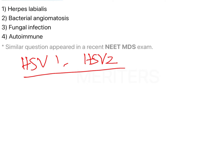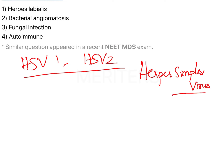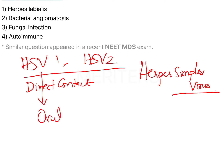HSV-1 and HSV-2 are majorly caused by herpes simplex virus. The transmission is through direct contact. You have two lesion types: oral lesions are caused by HSV-1, and HSV-2 causes genital lesions.